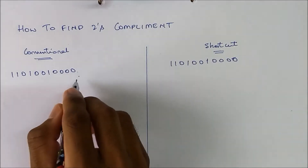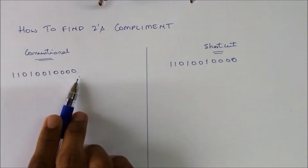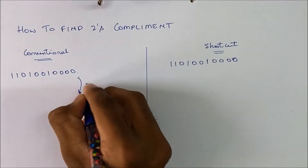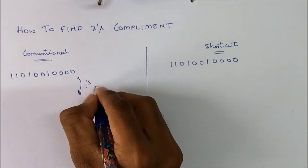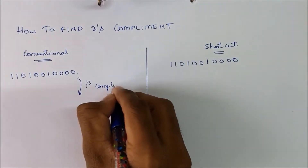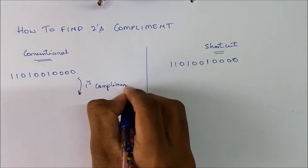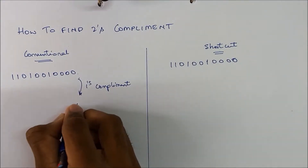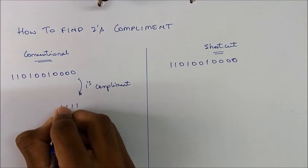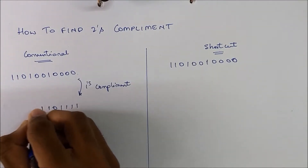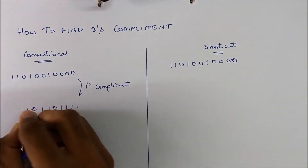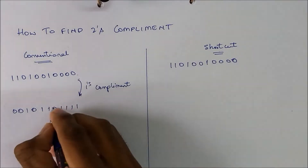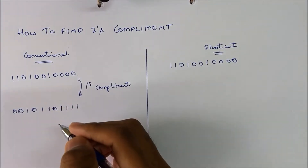First, in the conventional method, we will convert the given number into 1's complement. So write the 1's complement of the number: 0, 0, 1, 0, 1, 1, 0, 1, 1, 0, 1, 1, 1.